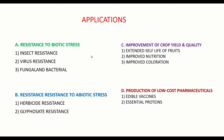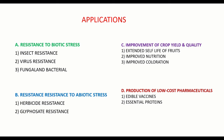Applications of transgenic breeding fall into four broad categories: first, resistance to biotic stresses including insect resistance, virus resistance, and fungal and bacterial resistance; second, resistance to abiotic stresses such as herbicide resistance or glyphosate resistance; third, improvement of crop yield and quality including extended shelf life of fruits like Flavr Savr tomato, improved nutrition like golden rice, and improved coloration in cabbage and cauliflower; fourth, production of low-cost pharmaceuticals, edible vaccines, and essential proteins.